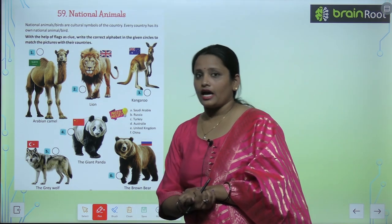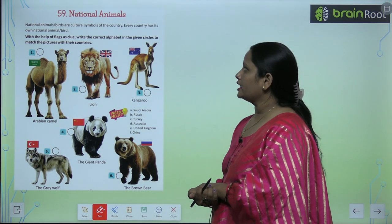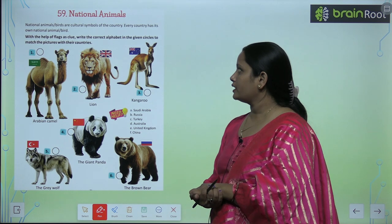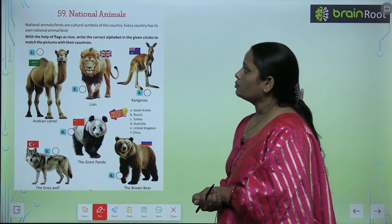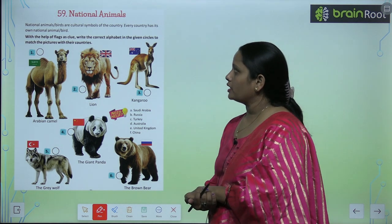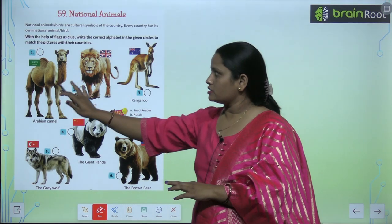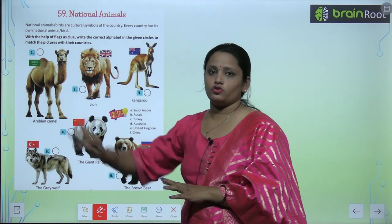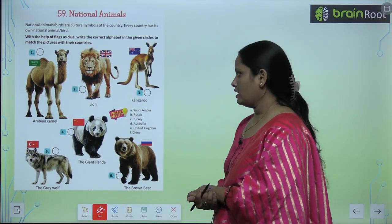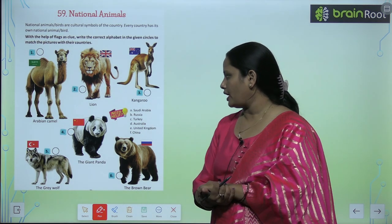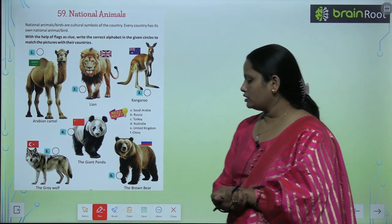With the help of the flags as a clue, write the correct alphabet in the given circles to match the picture with the countries. Here, there are some pictures of the country and the flag is given to us. We need to match them here.